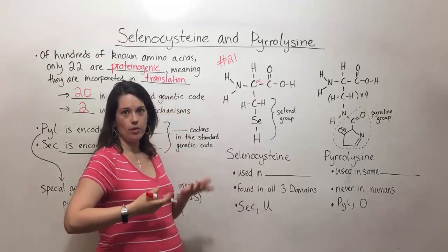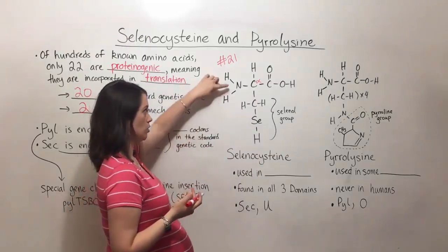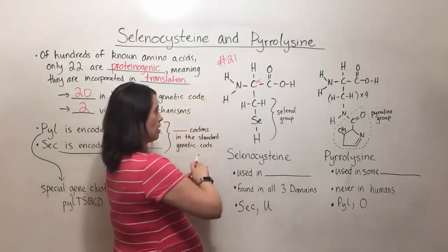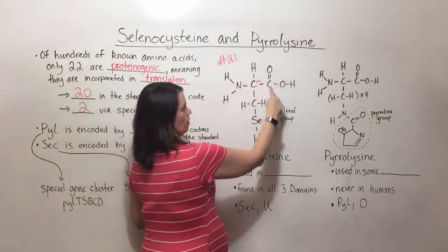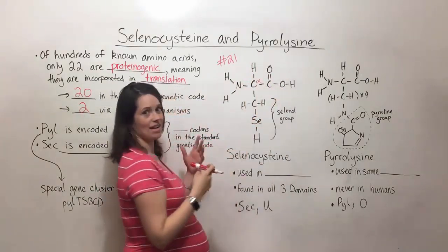Remember the alpha carbon in an amino acid is attached to four things. You've got the amino group, the hydrogen, the carboxyl group, and the R group.